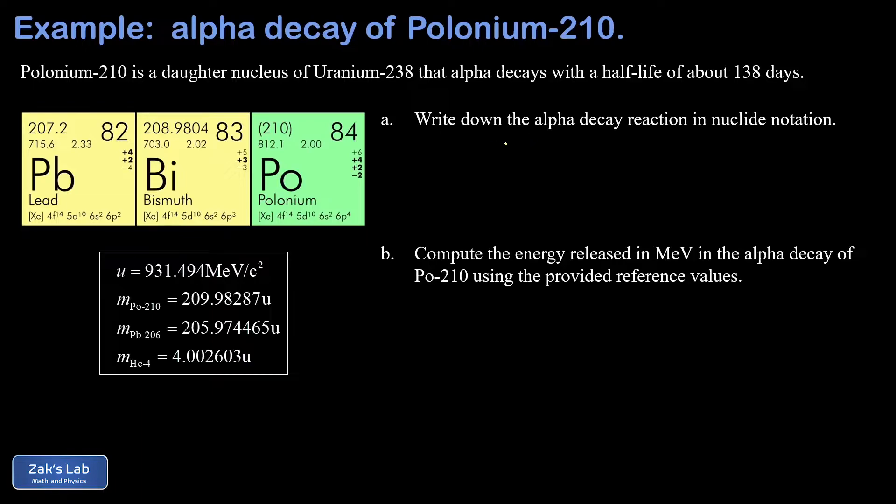What we're trying to do here is write down the reaction for the alpha decay of polonium-210, and then in the second part of the question, we're going to compute the energy released in this reaction in mega electron volts or MeV. We're given a reference table that includes the atomic mass unit written in MeV per c squared, then the mass of our original nuclide polonium-210 in atomic mass units. We're given a big hint about what results from the alpha decay of polonium-210: it's lead-206, and we're given the mass for that in atomic mass units. Finally, we're given the mass of helium-4, in other words an alpha particle, in atomic mass units. Note that all these masses actually include the mass of the electrons that would ordinarily be attached to their atom.